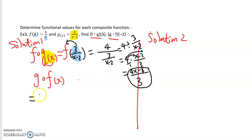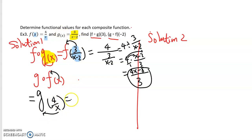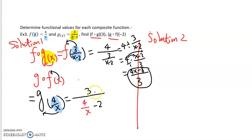For the second composite function g∘f, we keep g and plug x into the f function, which is 4 over x. Then we plug 4 over x into the g function. This is the g function — the top is 3, and the bottom variable x will be replaced by our new expression 4 over x, keeping everything else the same. You can simplify it if you want, but since we're just trying to evaluate specific values, I'm going to leave it as is.